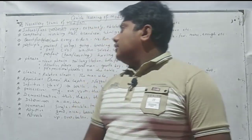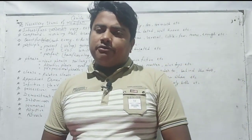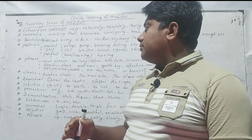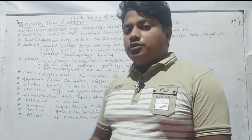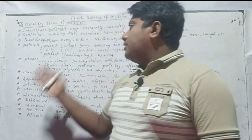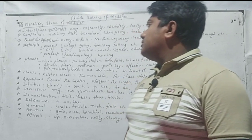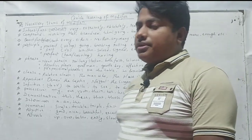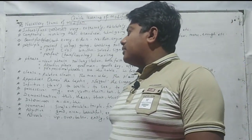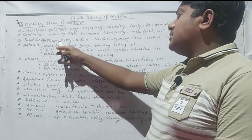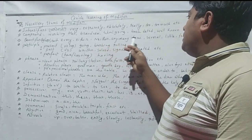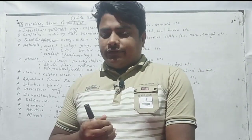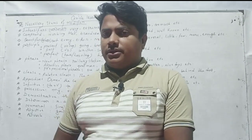The first type of phrase modifier is quantifier. Quantifiers include unspecified or uncountable frames — such as every, either, neither, any, many, some, several, little, few, more, enough. These cannot be measured, so they are uncountable quantifiers.